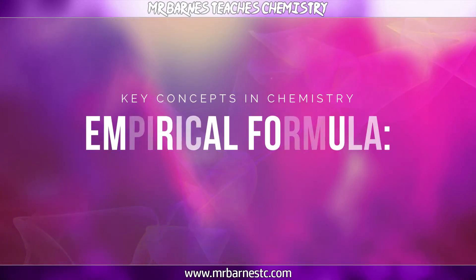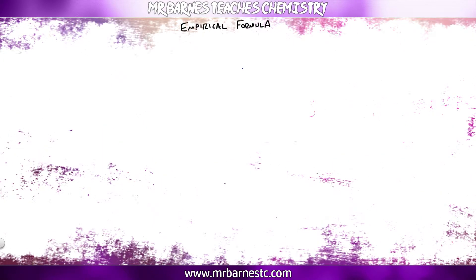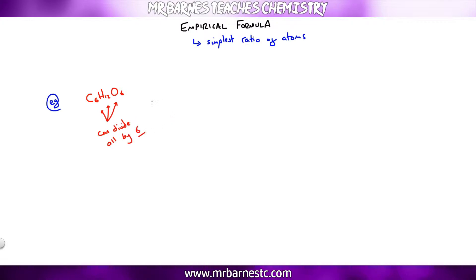The next section is the empirical formula. The definition is the simplest ratio of atoms. For example, C₆H₁₂O₆ — find the biggest number that all three values divide into, which is 6. So 6÷6=1, 12÷6=2, 6÷6=1, giving the empirical formula CH₂O.